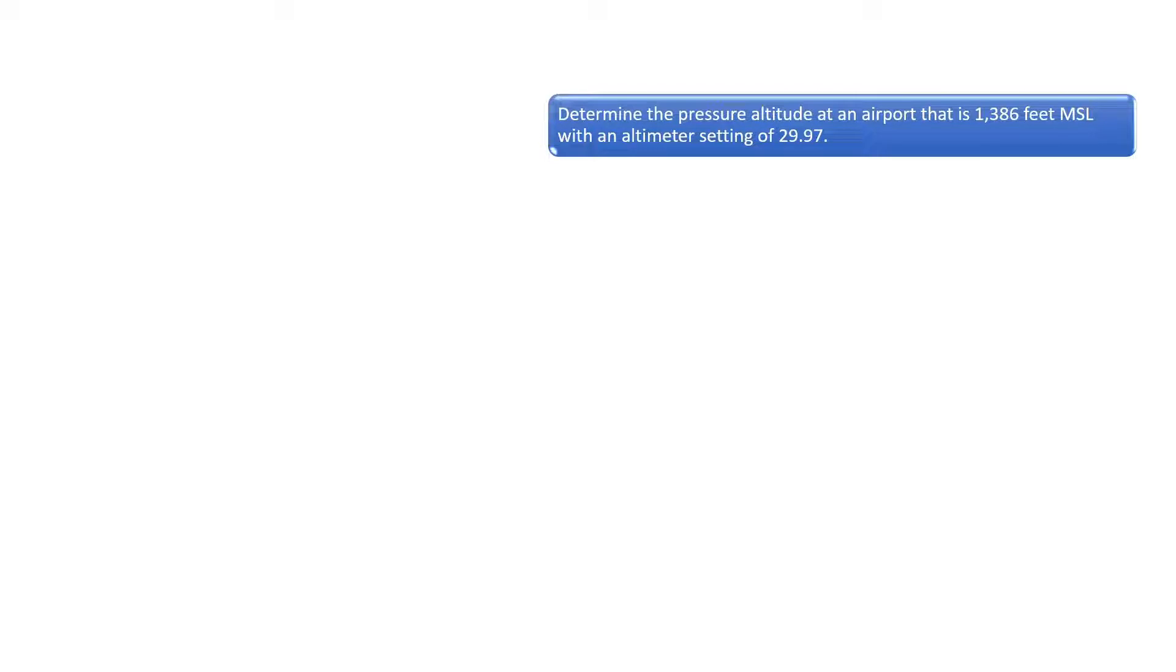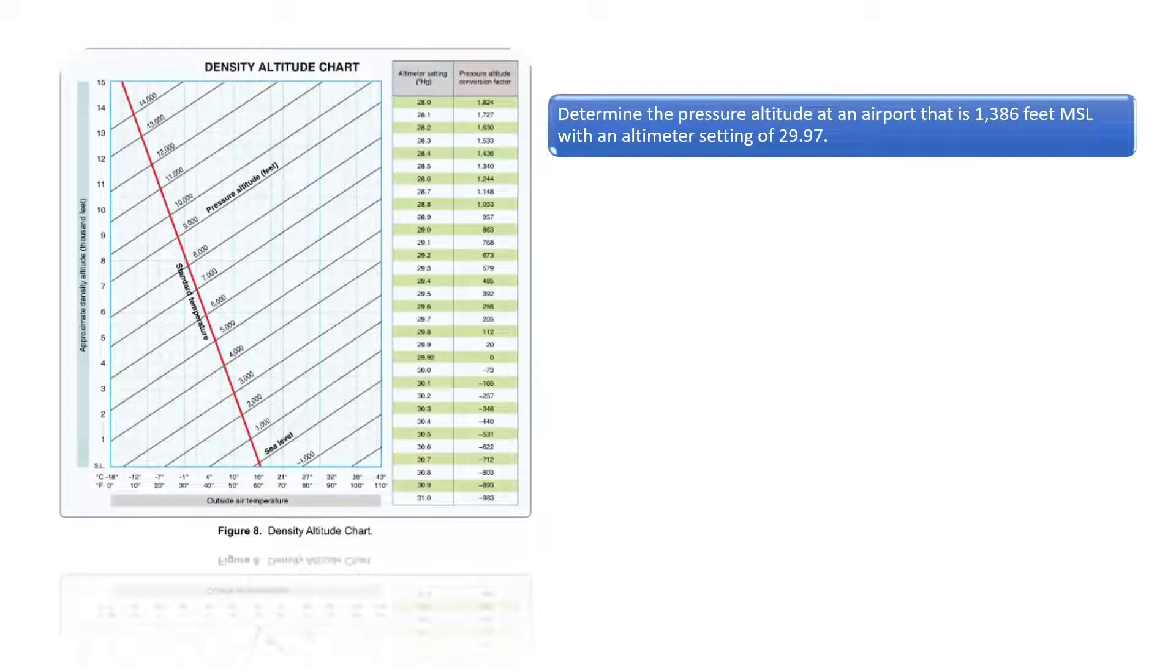Determine the pressure altitude at an airport that is 1,386 feet above mean sea level with an altimeter setting of 29.97.